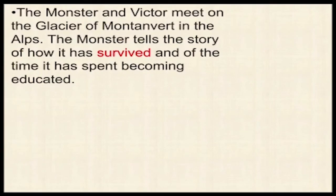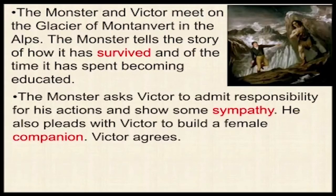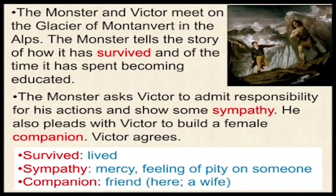The monster and Victor meet on the glacier of Mont Blanc in the Alps. The monster tells the story of how it has survived and of the time it spent becoming educated. The monster asks Victor to admit responsibility for his actions and show some sympathy and mercy. It also pleads with Victor to build a female companion — a wife for it — and Victor agrees to the request.